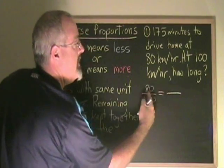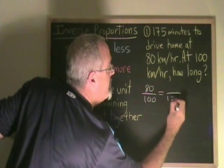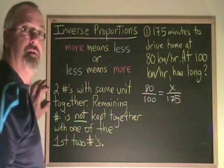Instead of putting the 175 on top so that it can be together with the 80, I put it on the bottom. And I put the x in the last remaining place.